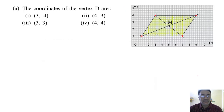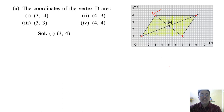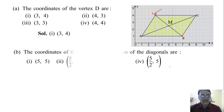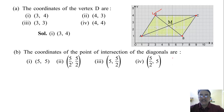The first question: the coordinates of vertex D are 3, 4. Yes, very good — 3, 4. And the second question is the coordinates of the point of intersection of the diagonals.